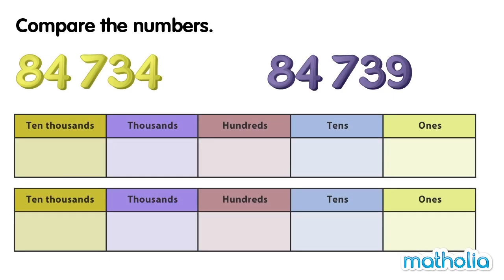Compare the numbers 84,734 and 84,739. Let's start by writing the numbers in the place value charts.